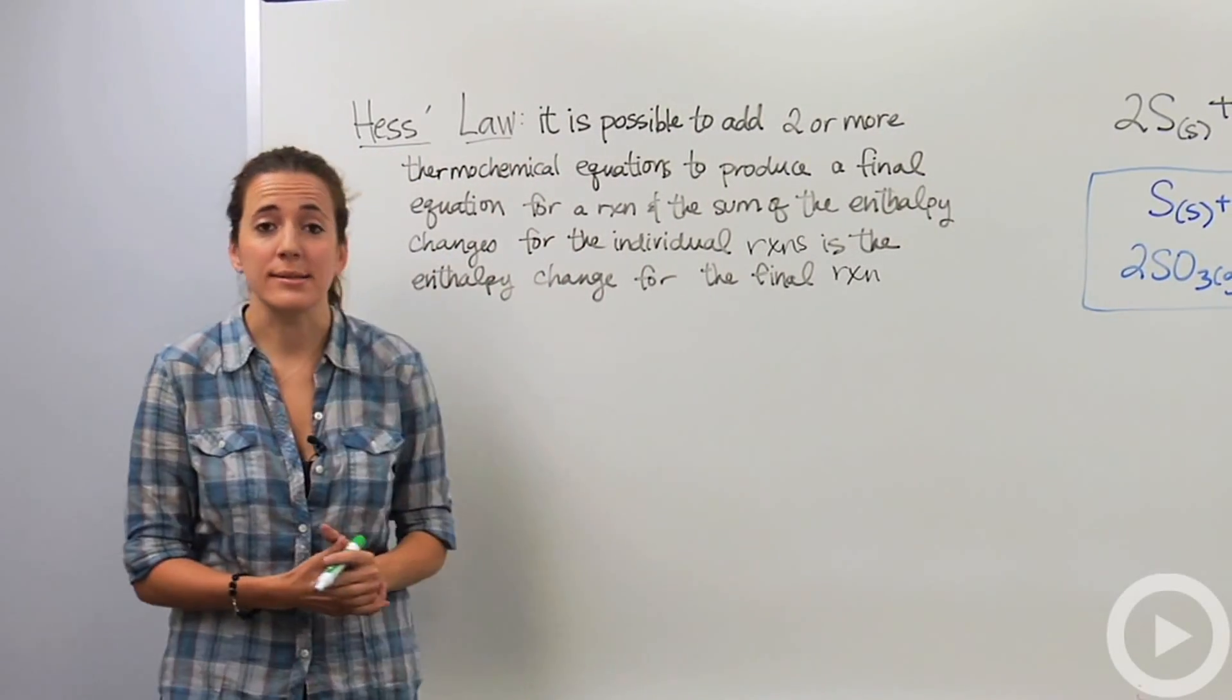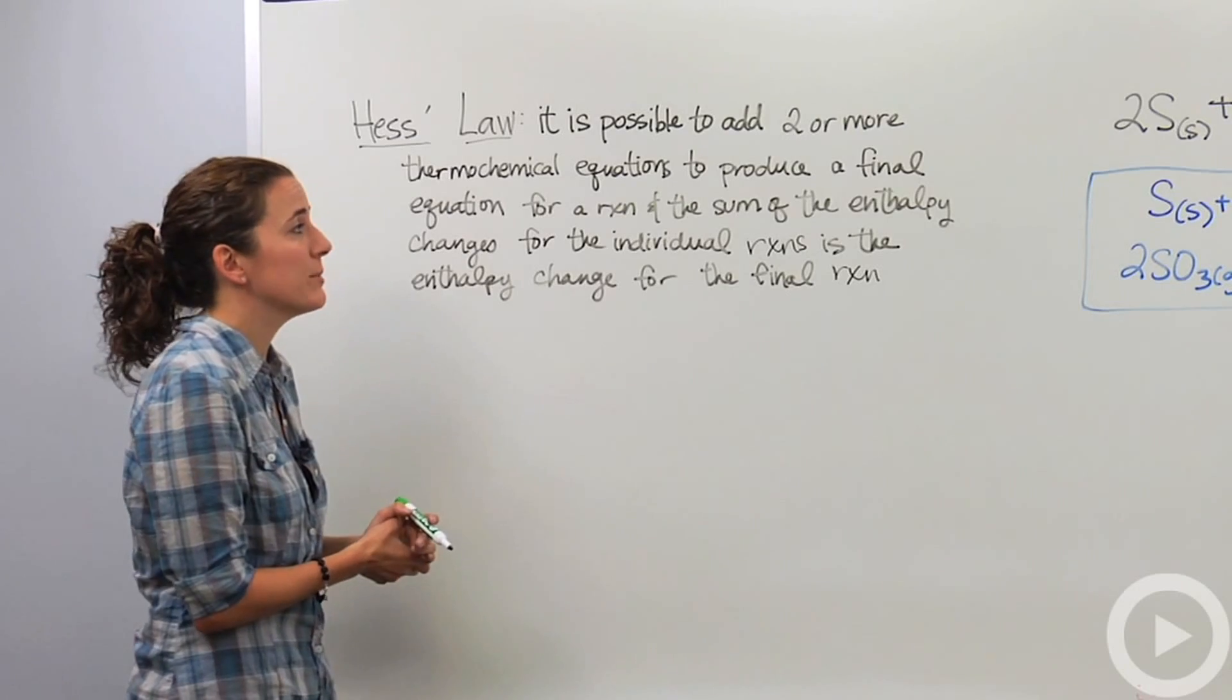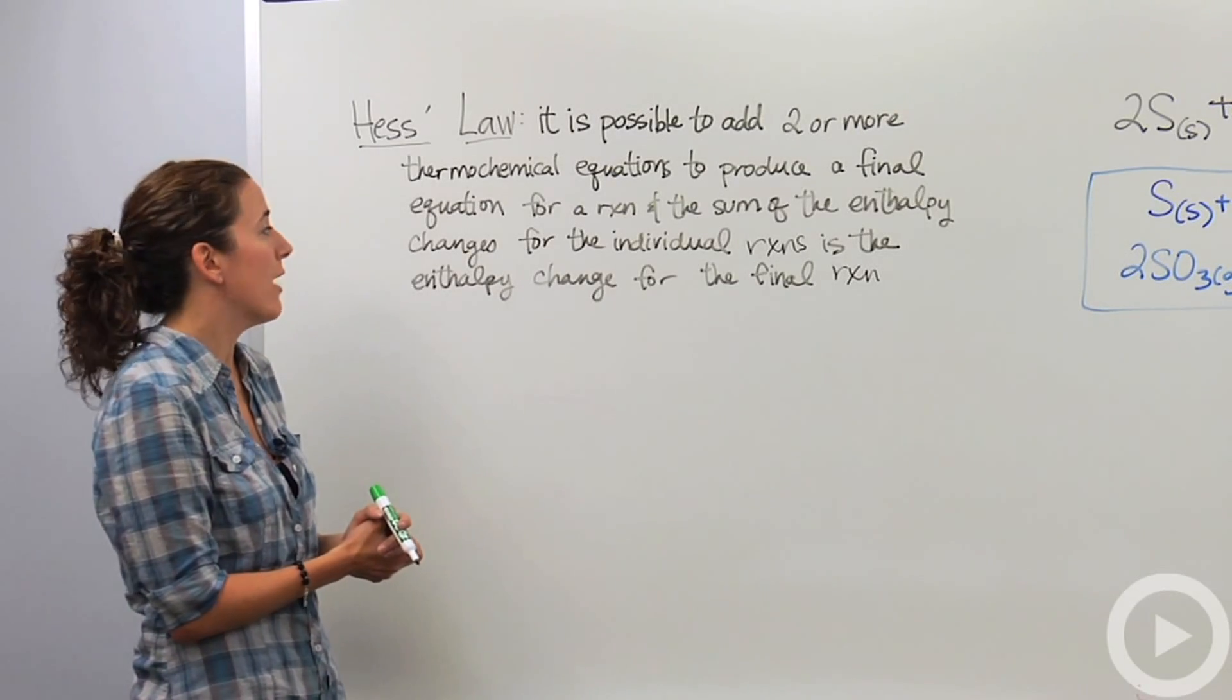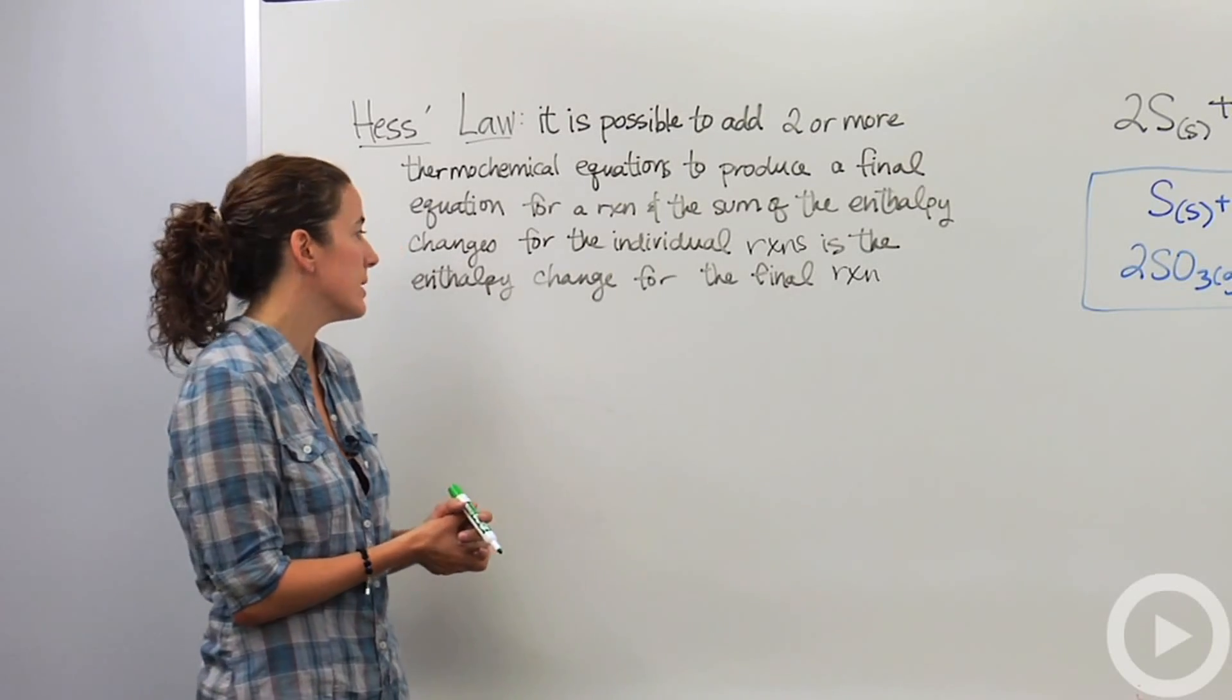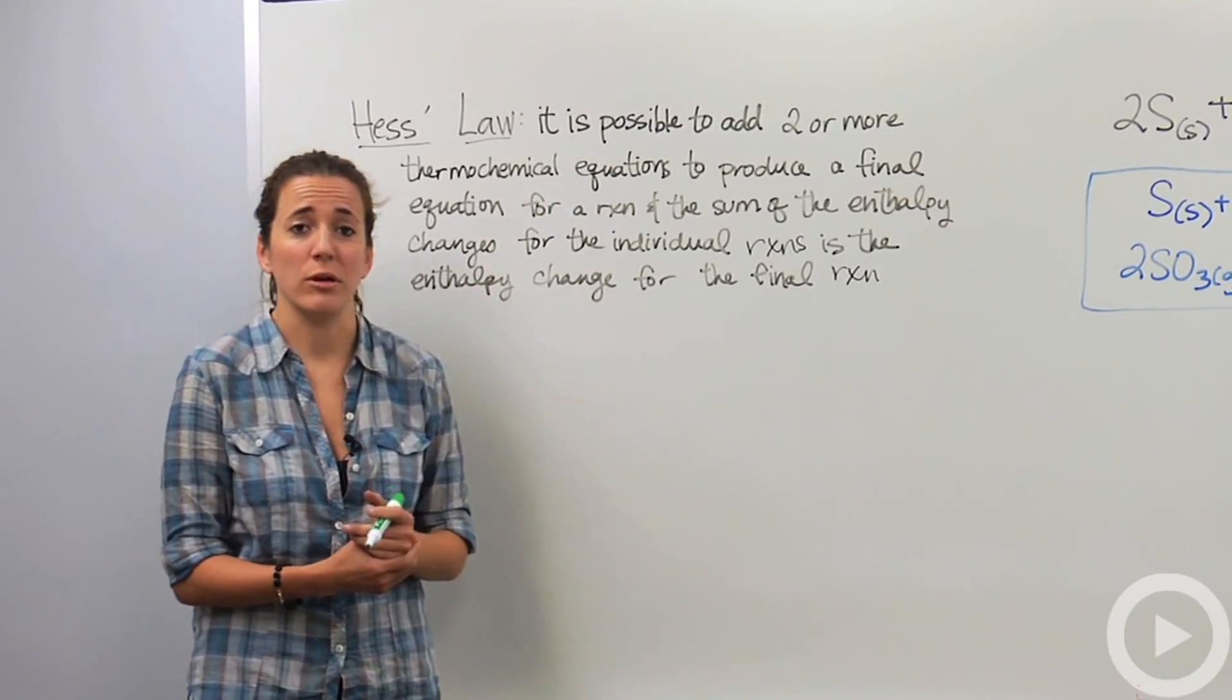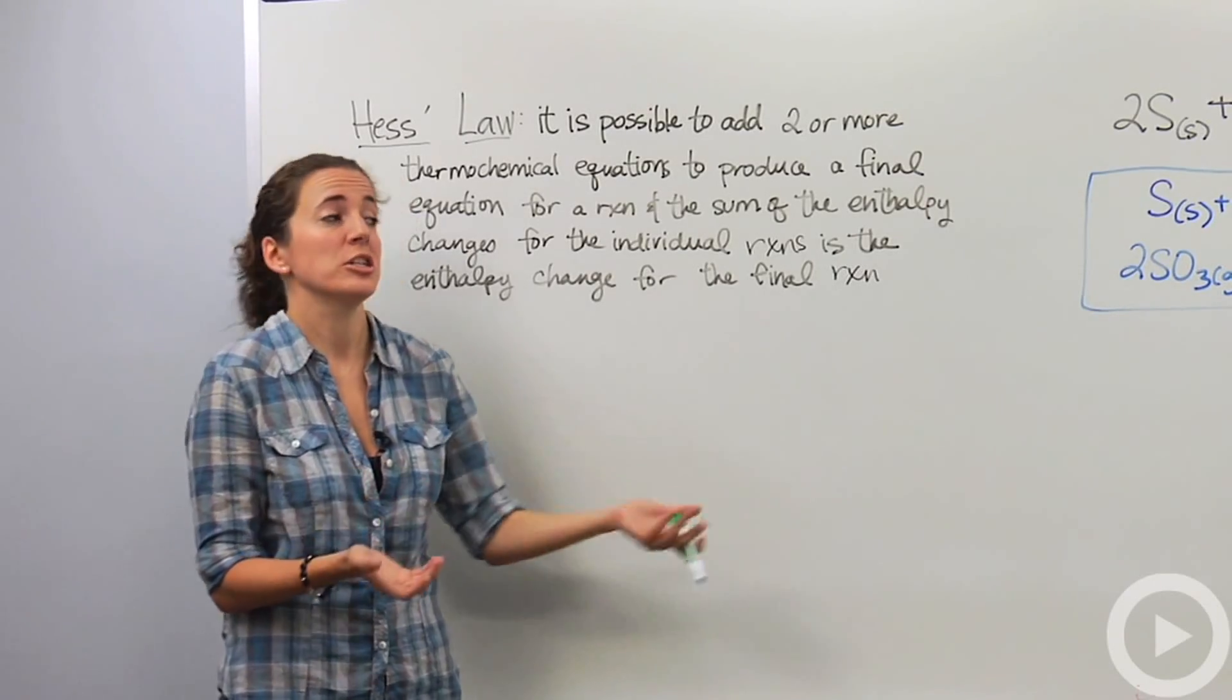There's this law called Hess's law. Hess's law states that it is possible to add two or more thermochemical equations to produce a final equation for a reaction and the sum of the enthalpy changes for the individual reactions is the enthalpy change for the final reaction. Now this is definitely a mouthful. It's much easier to explain if you actually do it.